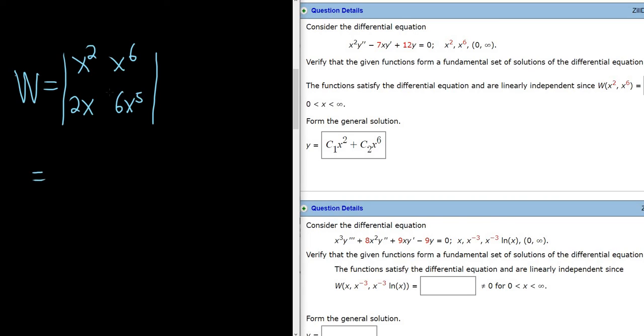And now we multiply. So this times this, it's going to be 6x to the seventh, right, because you add the exponents. Minus, there's always a minus in the formula. And then this times this, so 2x to the seventh. And that's equal to 4x to the seventh. And that's not equal to zero, so the functions are independent.